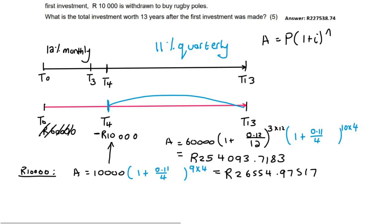And then you just put everything together. So because this one has a minus, you will just minus it. So the total for this school or whatever it is, is going to be 254,093.7183 minus 26,554.9751. And that should give us 227,538.74.